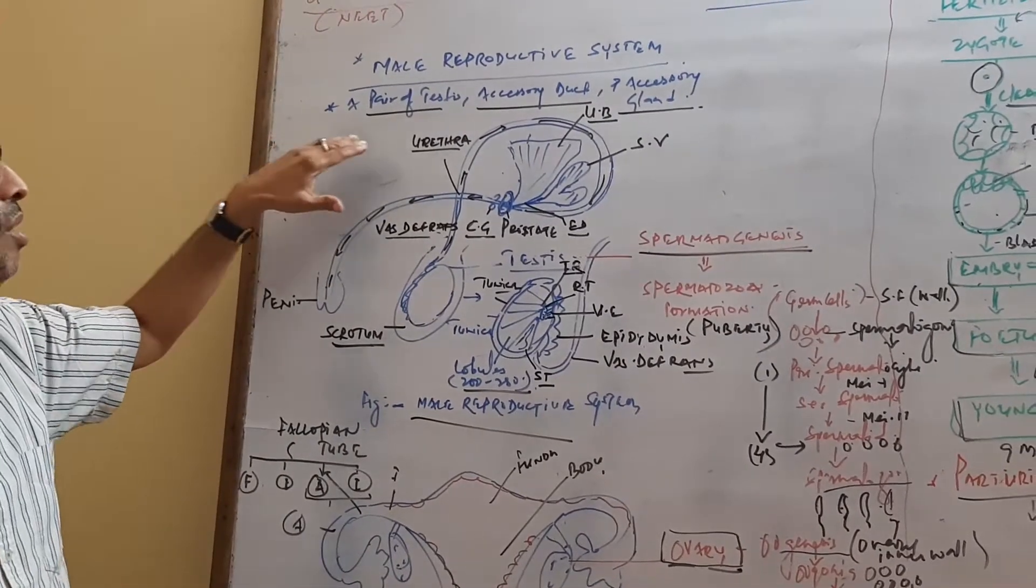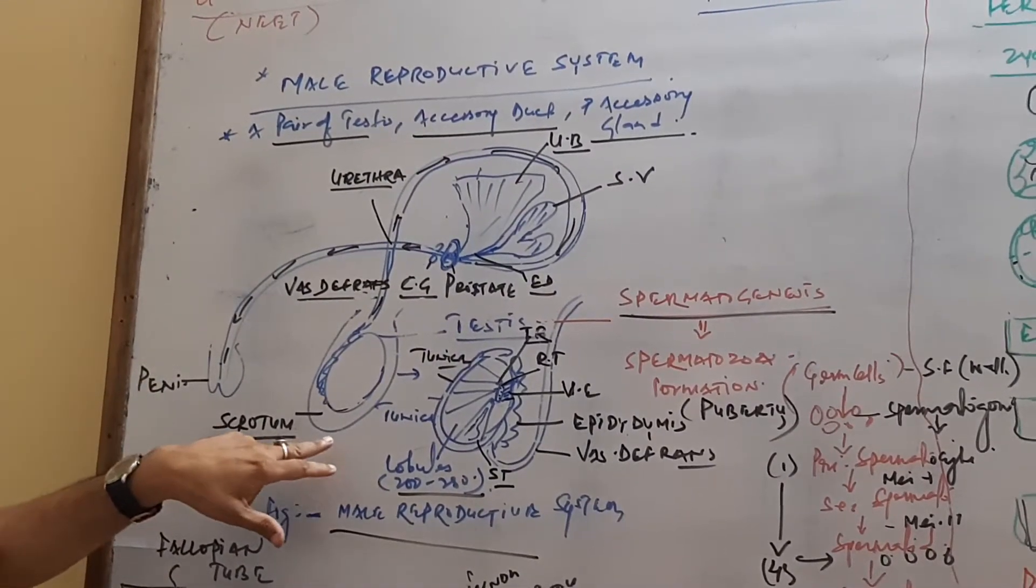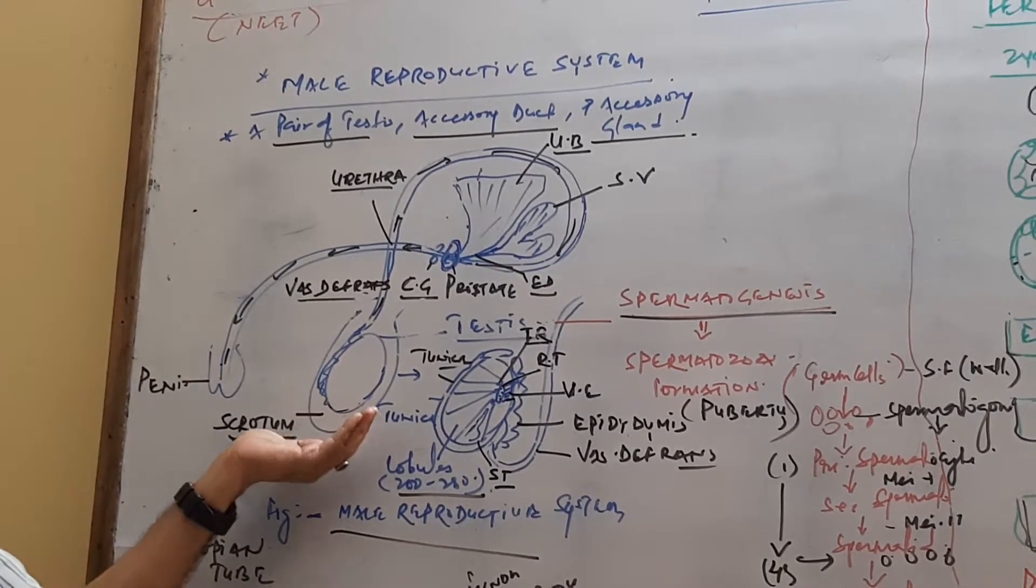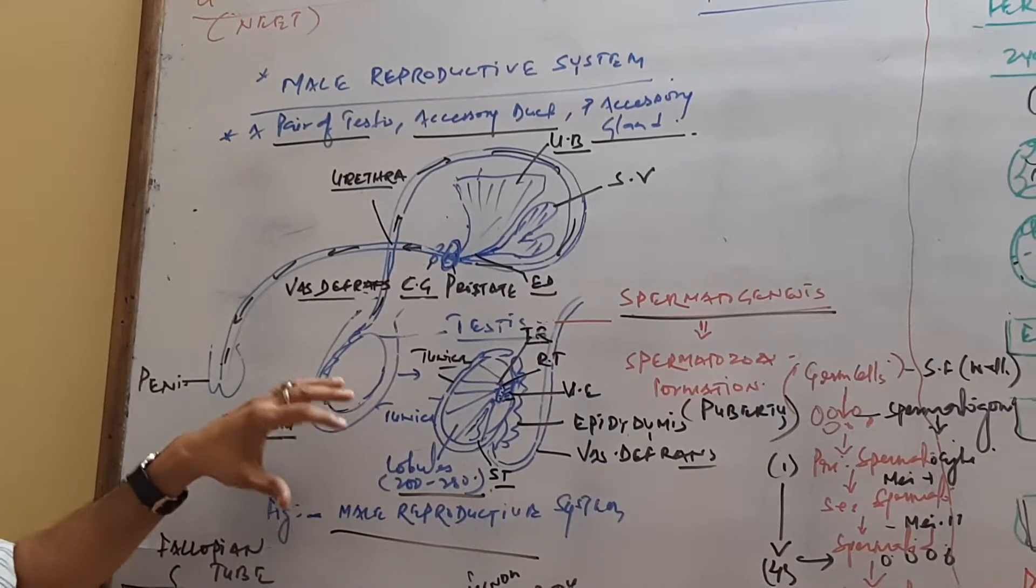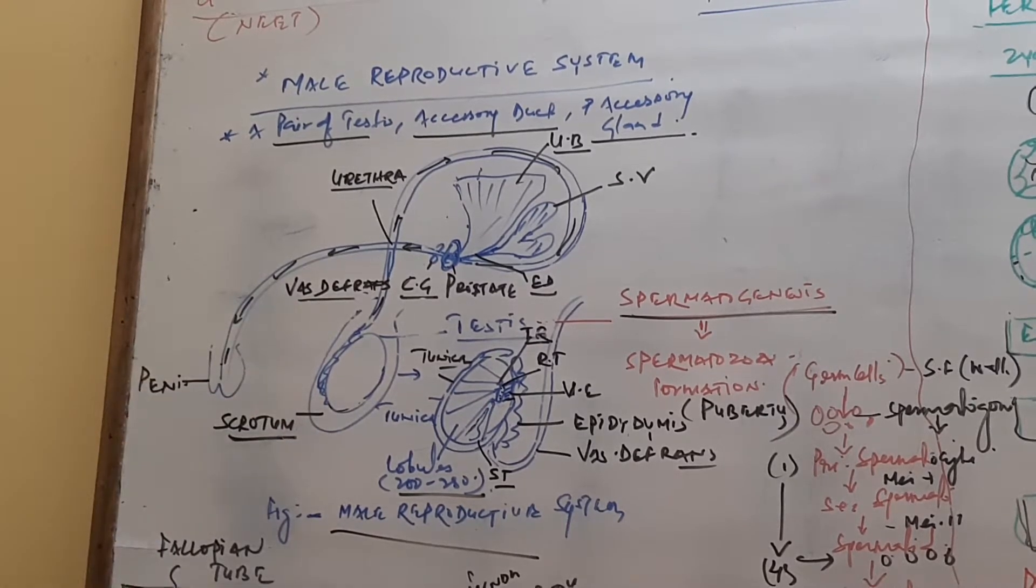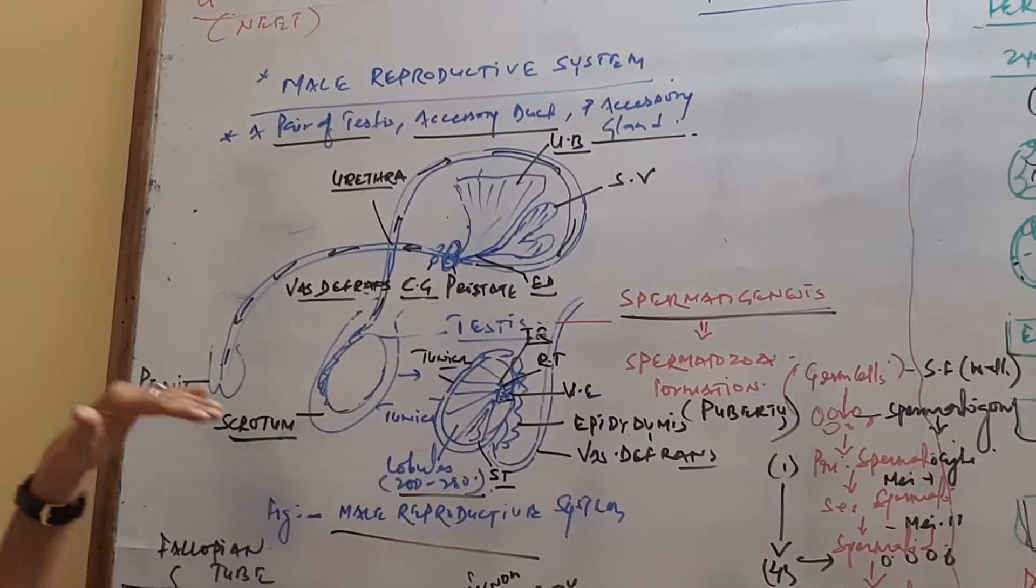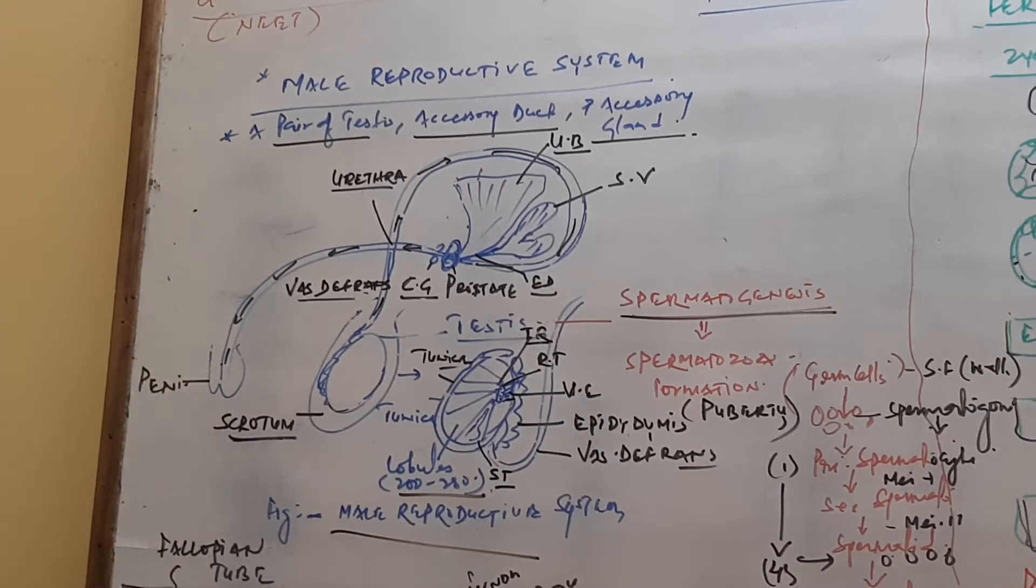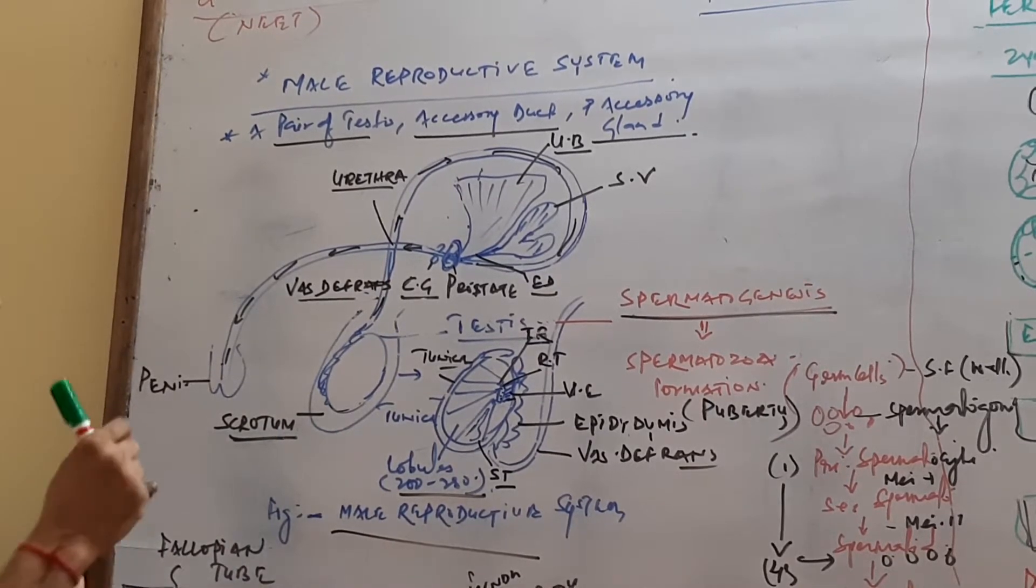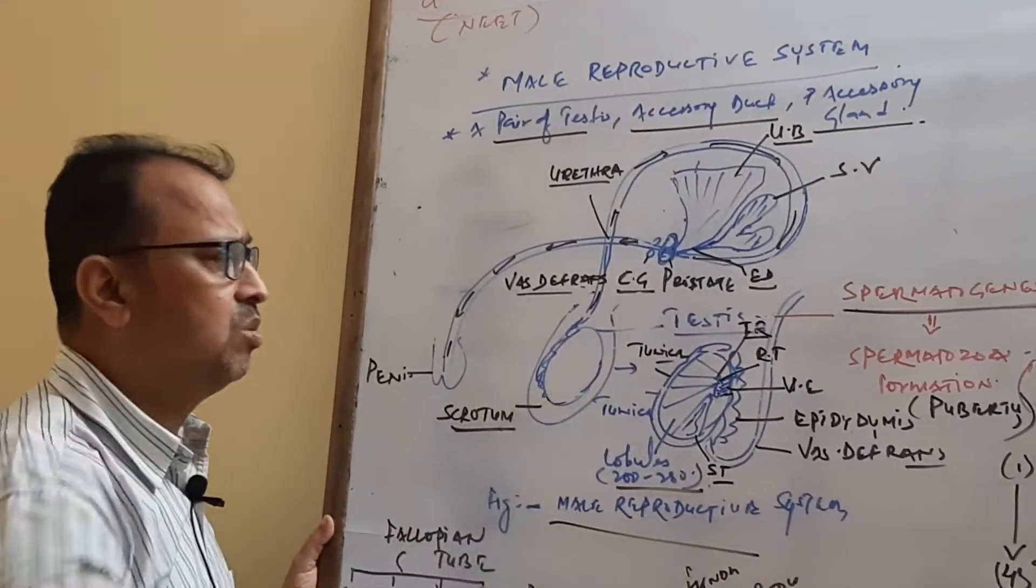In the male reproductive system, a pair of testes, accessory ducts, and accessory glands are present. The main sex organ is the testes. A pair of testes are present in a sac-like structure called scrotal sacs. The main reason testes are present in the scrotal sacs is the temperature is quite less, about 2 to 3 degrees centigrade lower. More sweat glands are present and a cooling effect takes place, which helps in the spermatogenesis process.